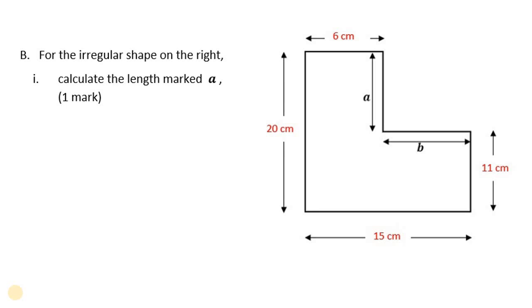Okay, now for the irregular shape on the right, calculate the length of A. So guys, what you're simply going to do here, look at A, it's a vertical line, right? That's the first thing you'll notice, it's a vertical line.